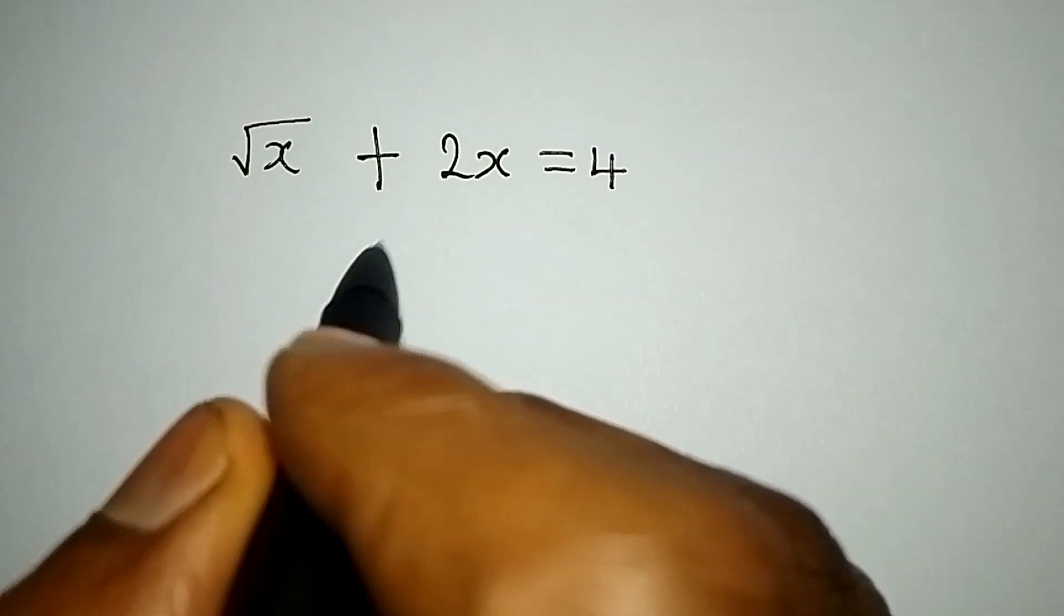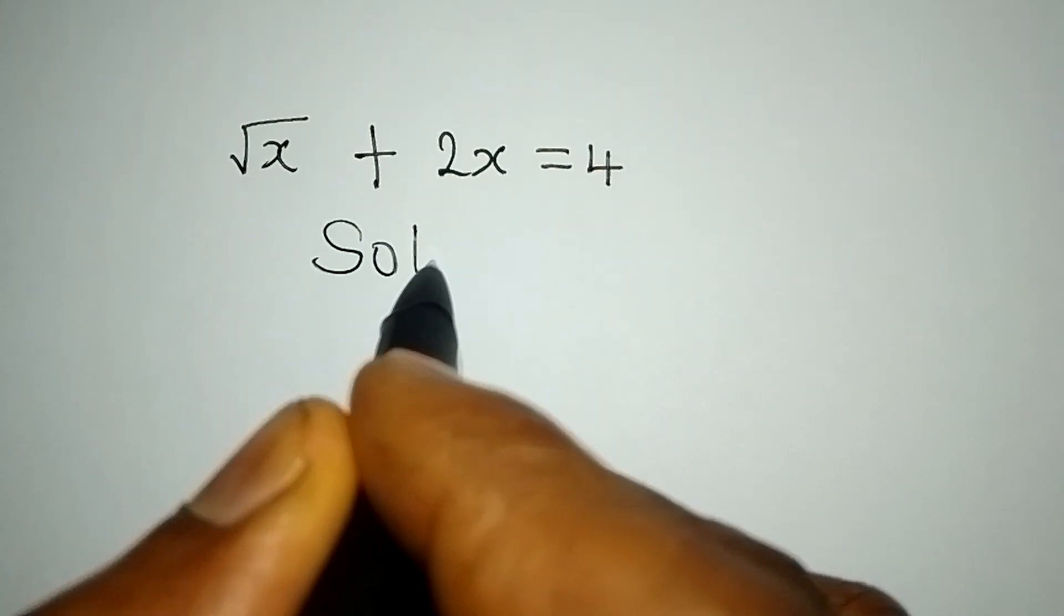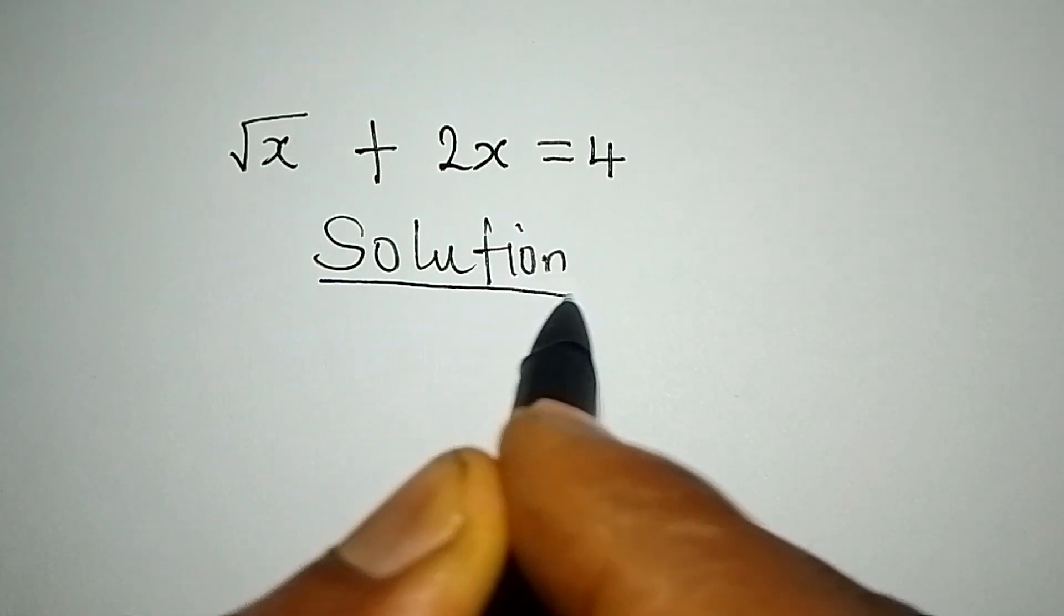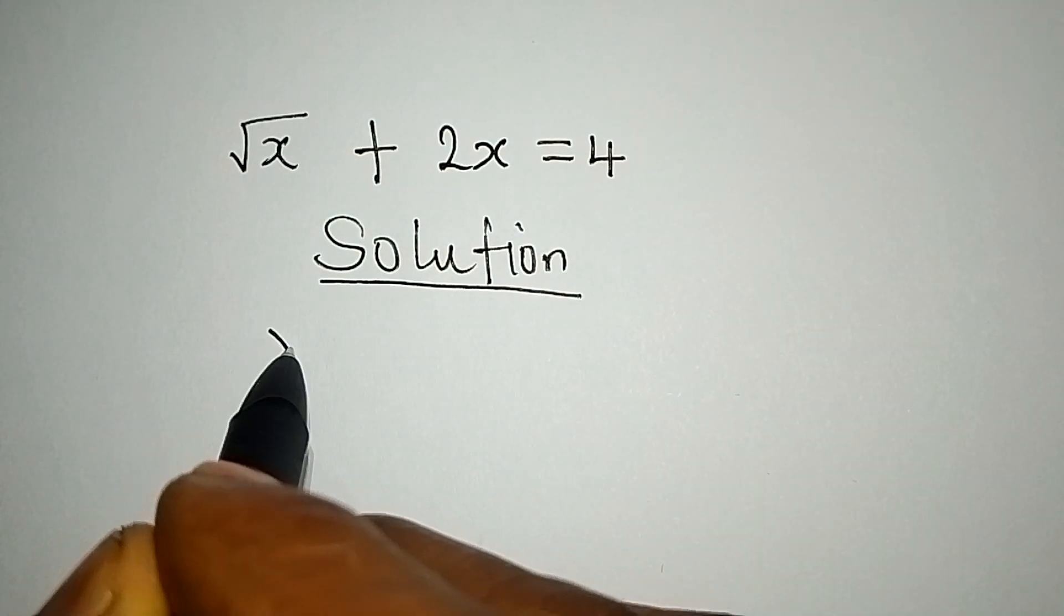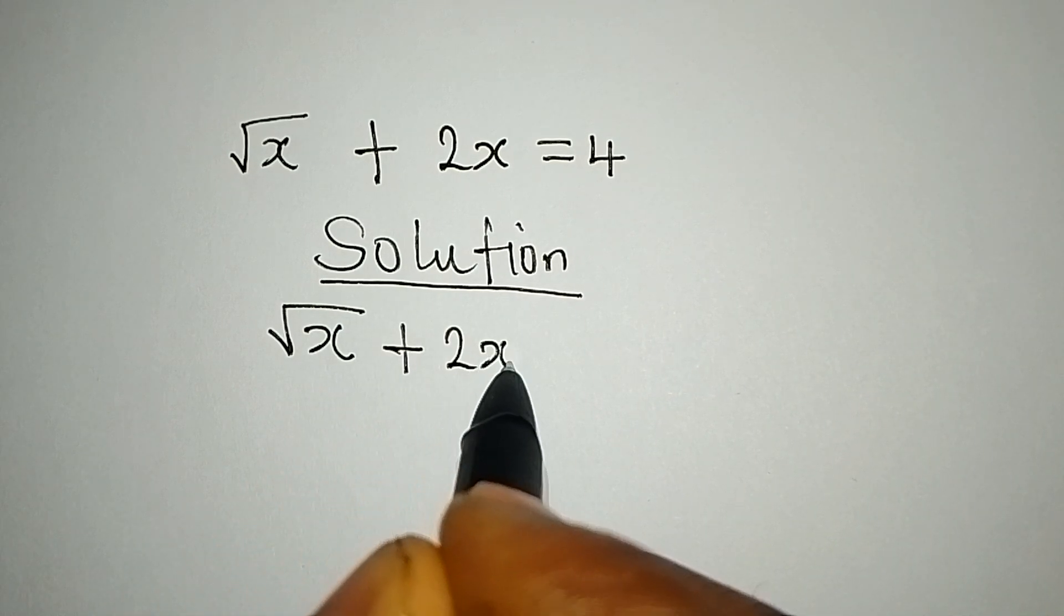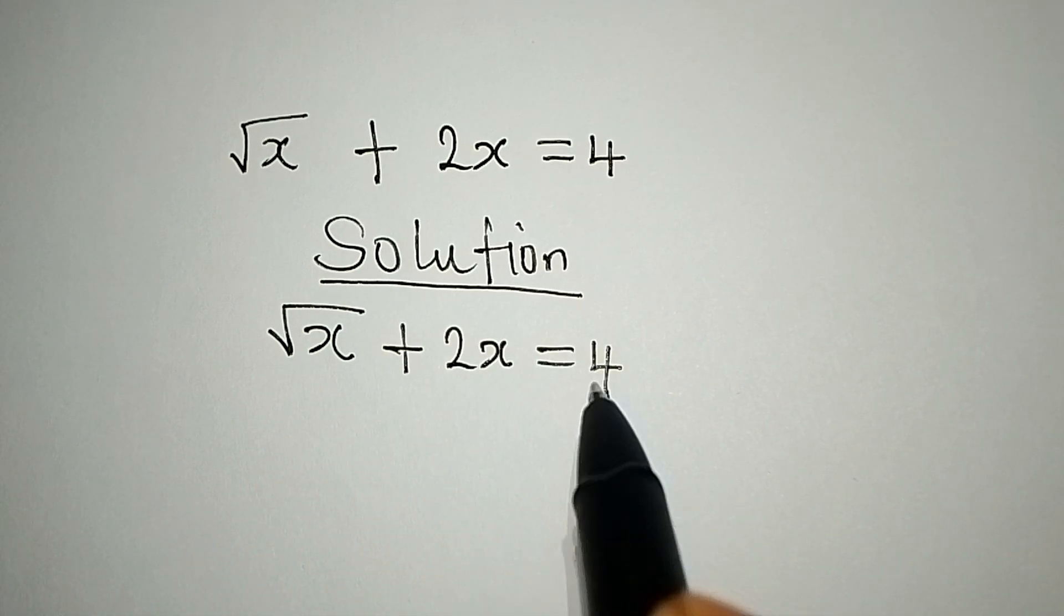Hello everyone, let's provide the solution to this problem. We have square root of x plus 2x equals 4.